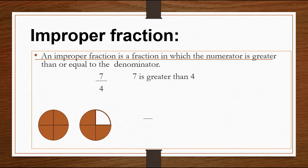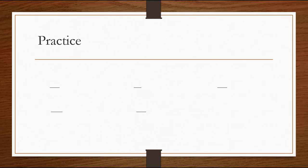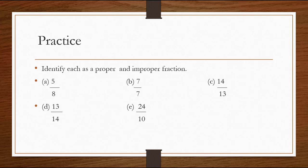Now we have two circles and the colored parts total seven. So the fraction for the colored part is seven over four. Comparing, seven is greater than four, so seven over four is an improper fraction. We can identify whether a fraction is proper or improper by comparing the numerator and denominator. In part A we have five over eight — the numerator is less than the denominator, so it is a proper fraction.